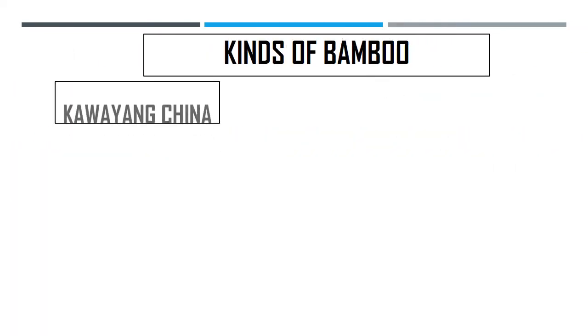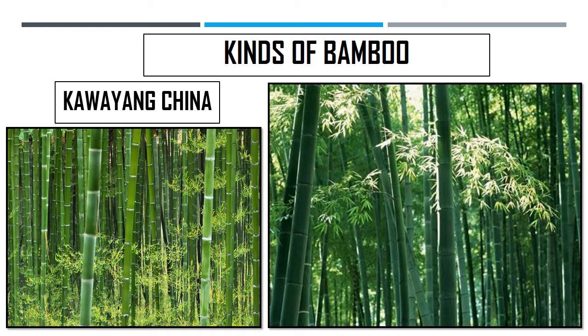Another one is kawayan china. The clumps of this bamboo are usually from 1 to 3 meters in height, and the clumps are up to 3 centimeters in diameter.